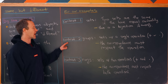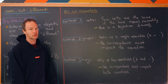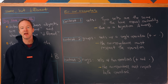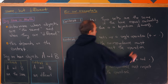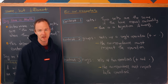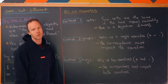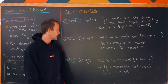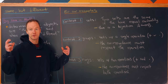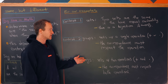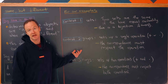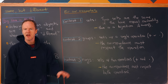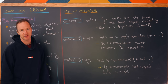For our second context, we'll look at groups. Groups are sets with a single operation — for our examples that operation will be either addition or multiplication. For groups to be the same, the correspondence we use to compare them as sets must also respect the operation. We'll see exactly what that means as we look at our examples.